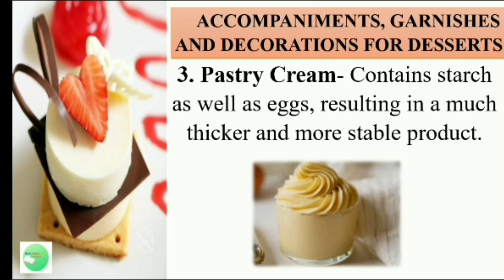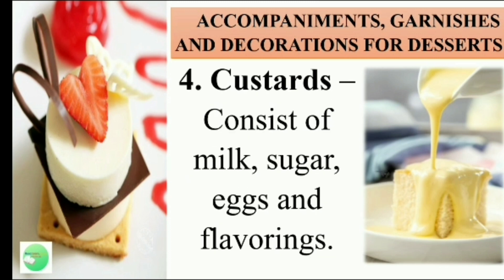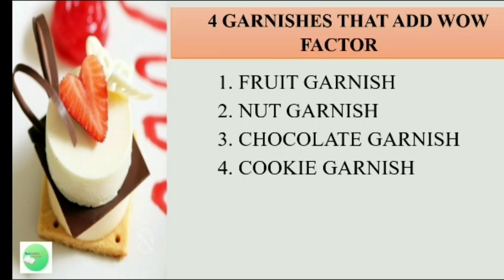Third, pastry cream. Pastry cream contains starch as well as egg, resulting in a much thicker and more stable product. Number 4, custard. Custard consists of milk, sugar, eggs, and flavorings. Custard is a variety of culinary preparations based on a cooked mixture of milk or cream and egg or egg yolk. Examples that use custard include banana custard and cheesecake.